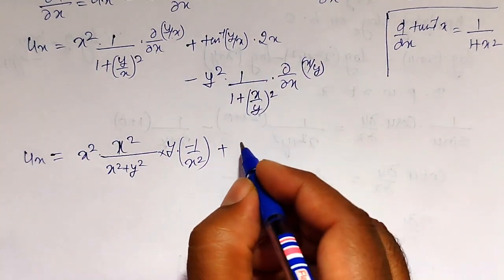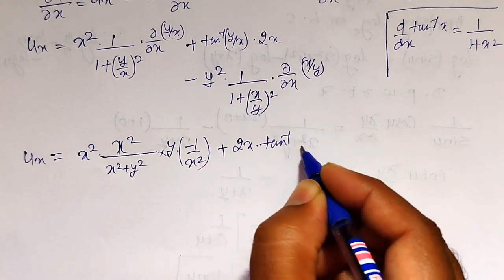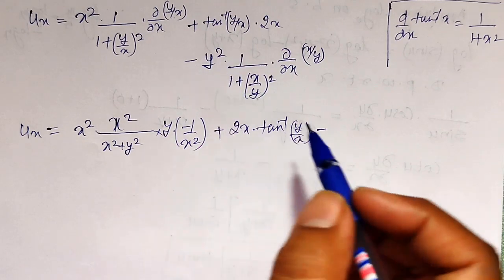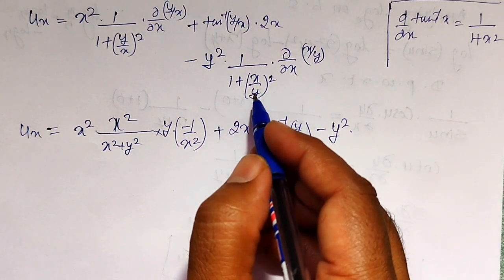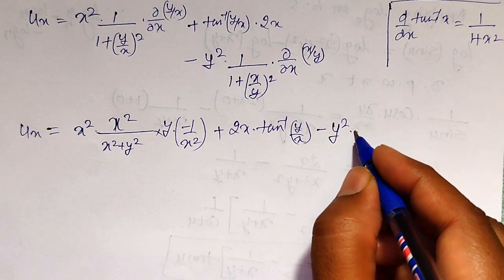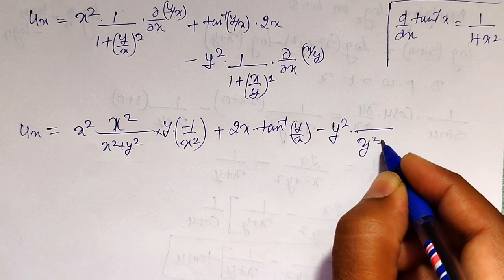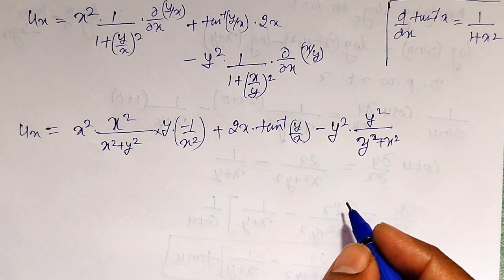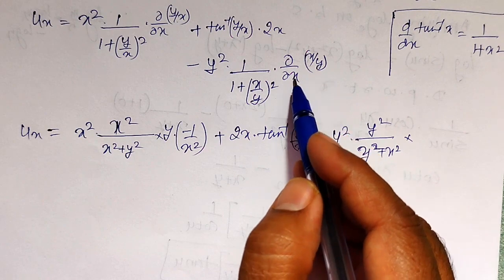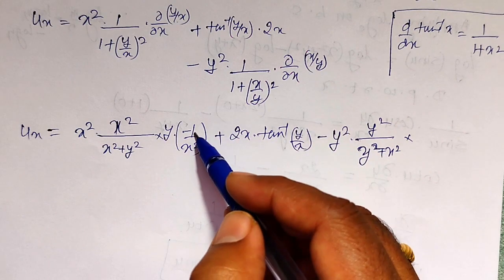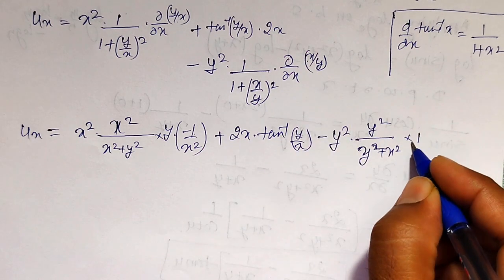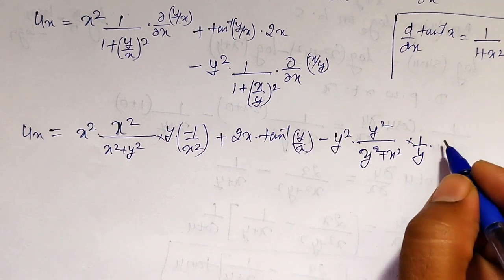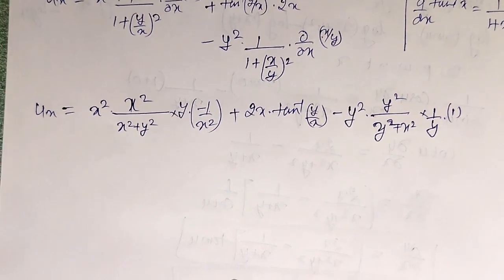Plus 2x into tan inverse of y by x, minus — simplification of the third term: y square into, LCM is y square, so y square plus x square divided by y square; taking the reciprocal gives y square divided by x square plus y square, into differentiation of x by y with respect to x. Since 1/y is constant and differential of x is 1, this gives 1 by y. Let us check what we get after simplification.